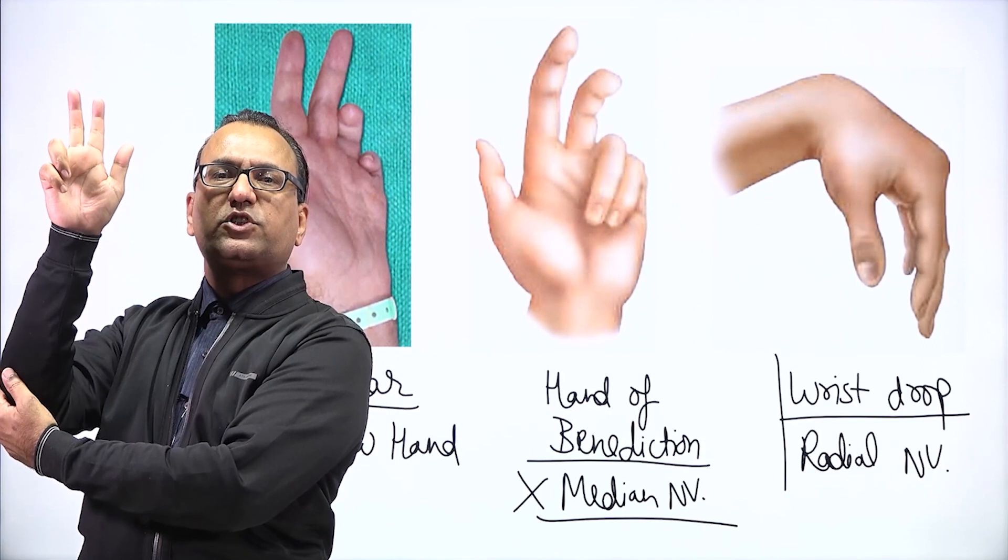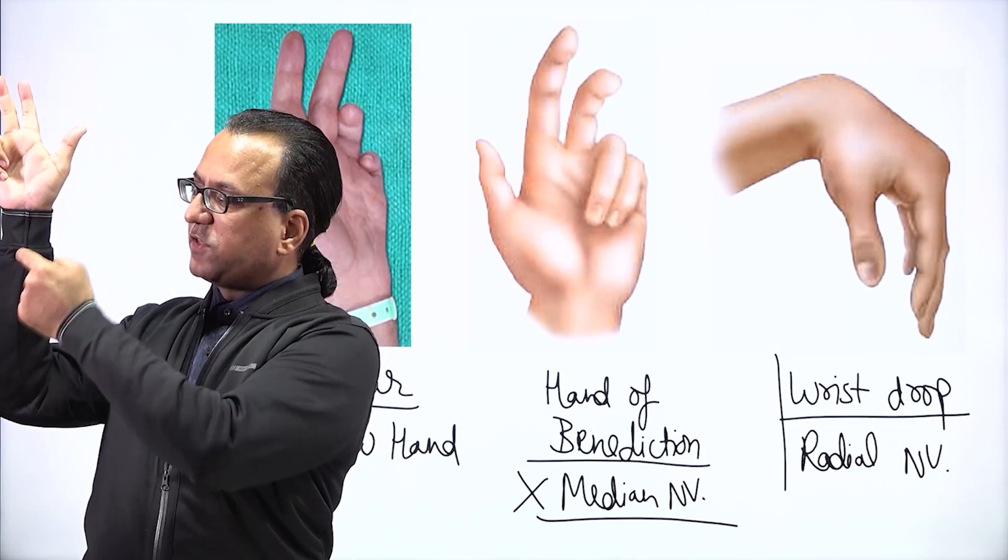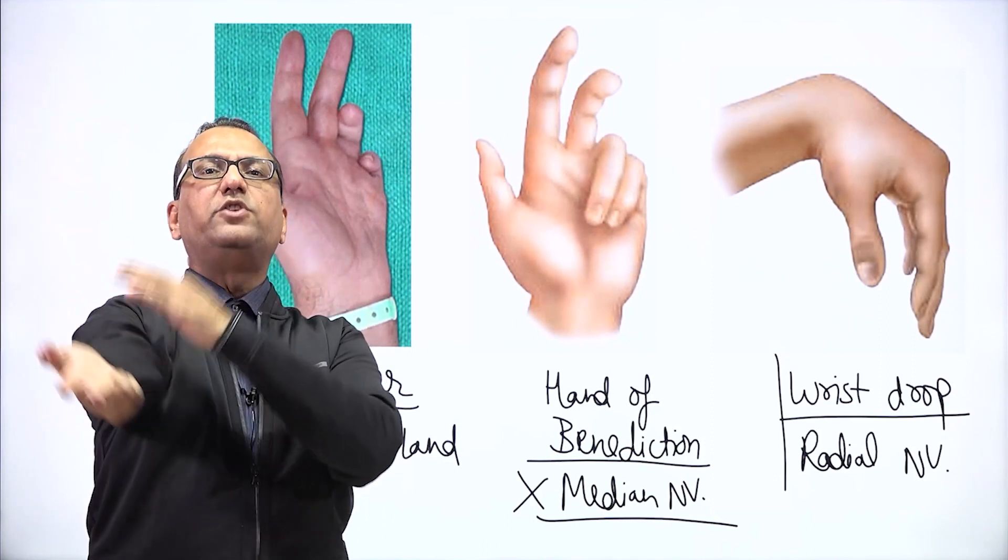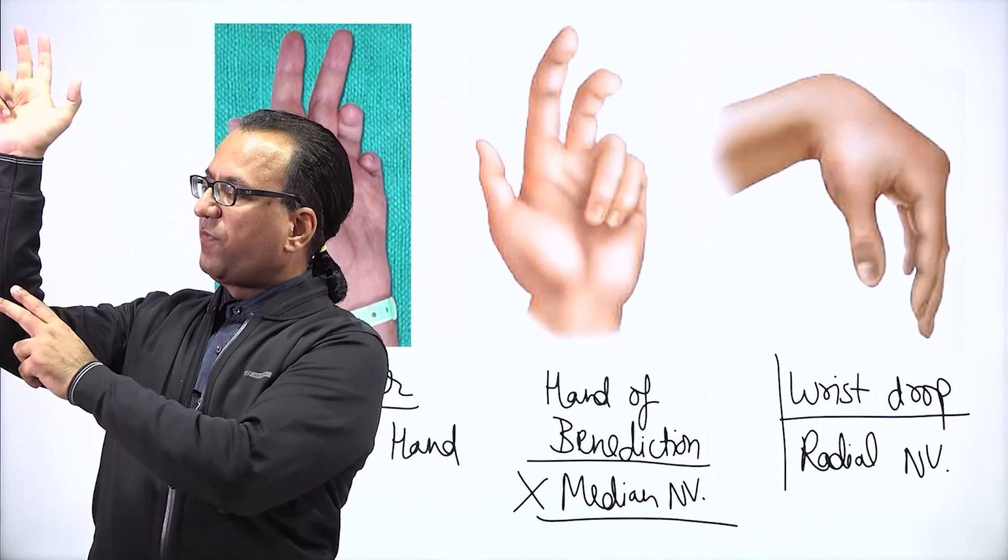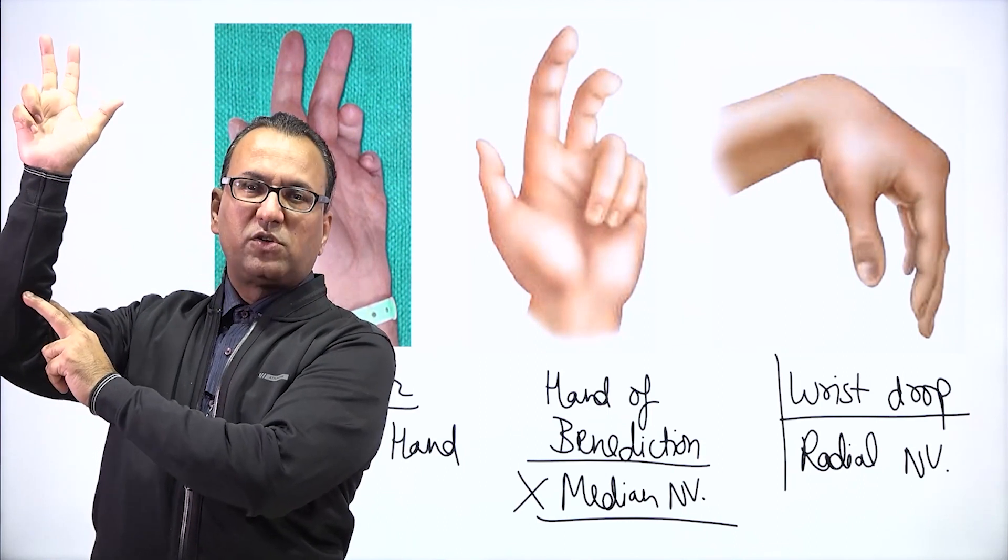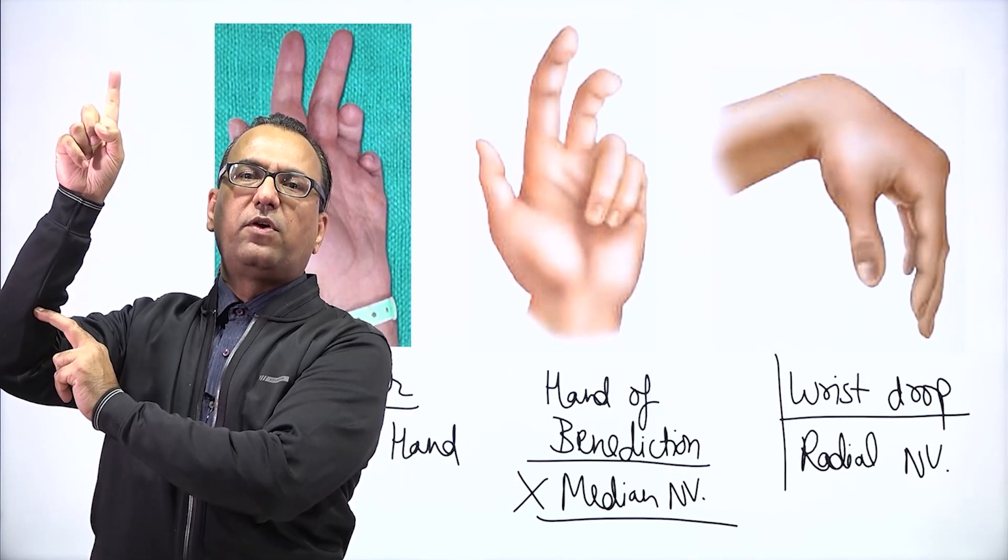And if you want to fold these fingers, you need lateral half of flexor digitorum profundus and flexor pollicis longus for folding the thumb. But they need median nerve. If there is a median nerve injury at a higher level, the flexor digitorum profundus towards the lateral side and flexor pollicis longus, they are not working. So these fingers find difficulty in folding.